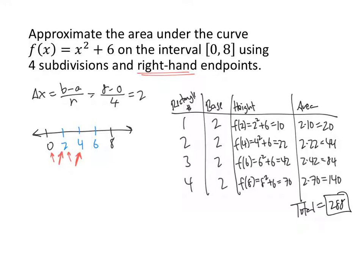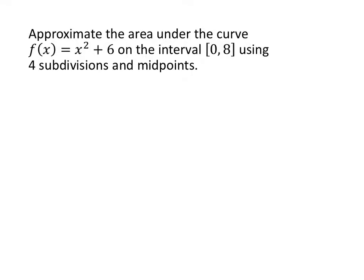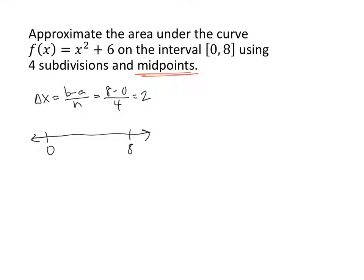One more time, but now using midpoints instead of left-hand or right-hand endpoints. That means using the number exactly halfway in the middle of each subinterval. Delta x is still 2, and the number line still has dividing lines at 2, 4, and 6. To find midpoints, average the two endpoints: between 0 and 2 the midpoint is 1, between 2 and 4 it's 3, between 4 and 6 it's 5, and between 6 and 8 it's 7.